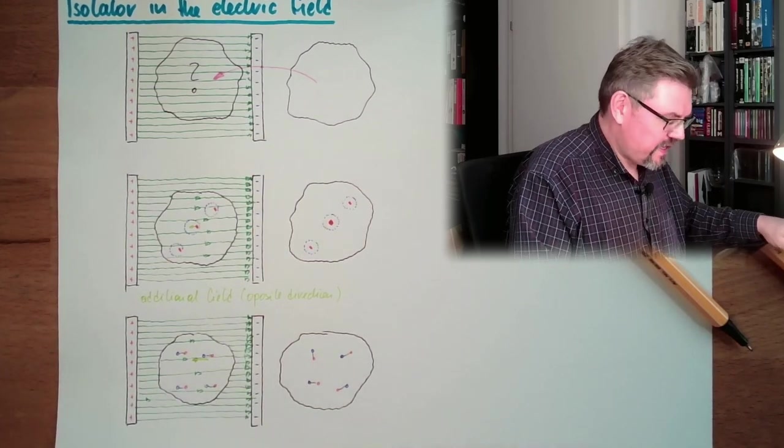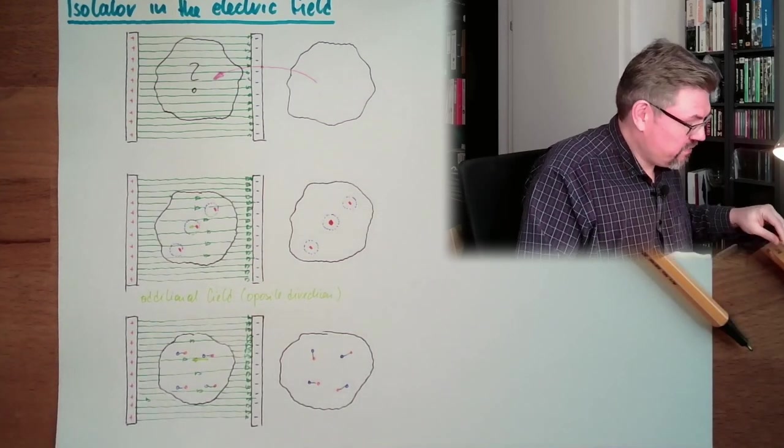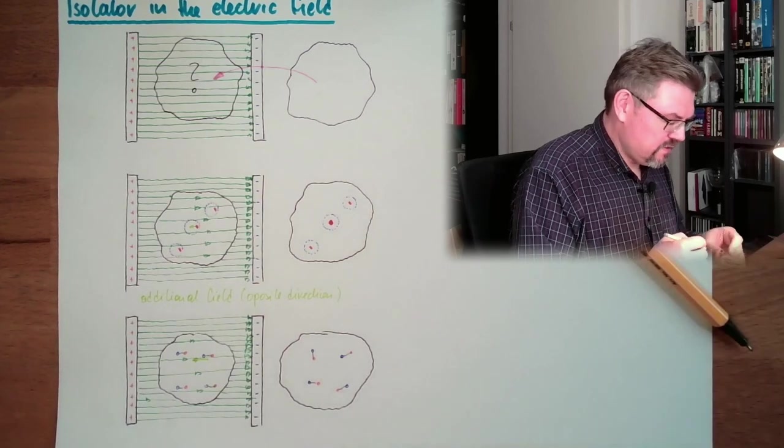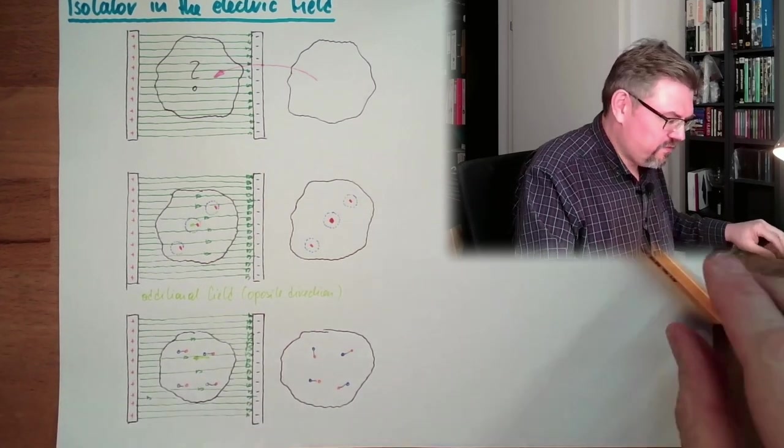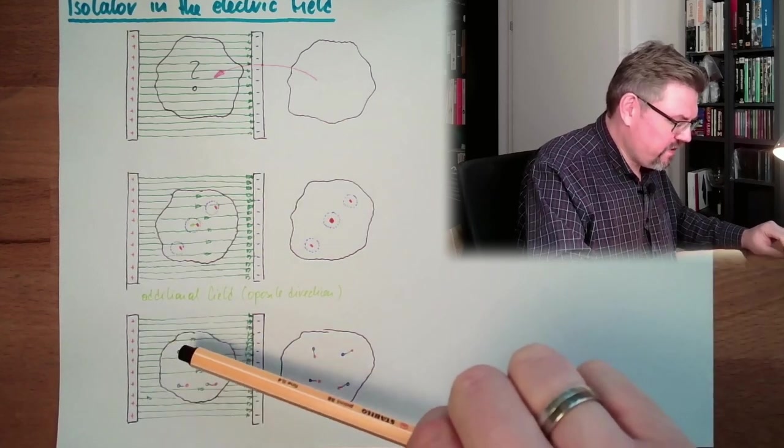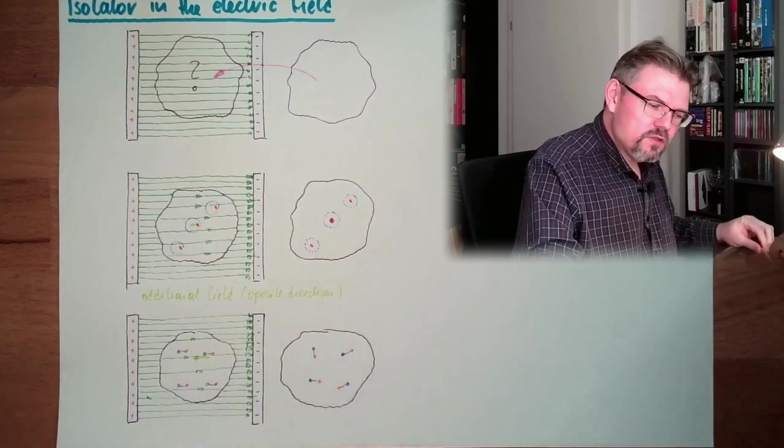So we do have an even weaker internal field. So this is actually what matter, also isolating matter, is doing: reducing. The flux is the same, right? There's the same flux density and everything. But the electric field is reduced.